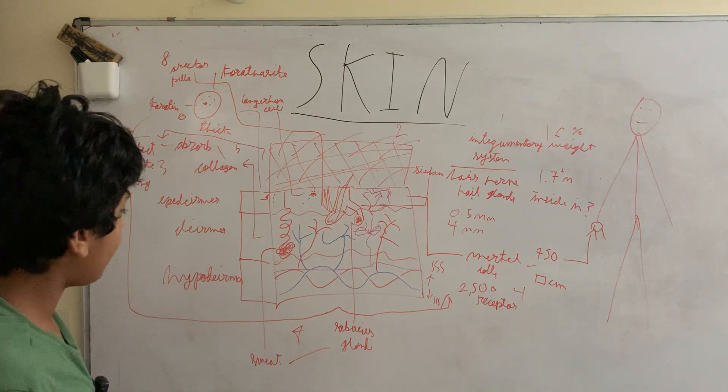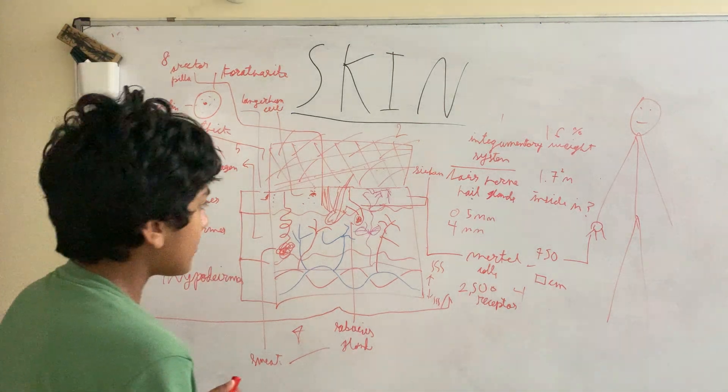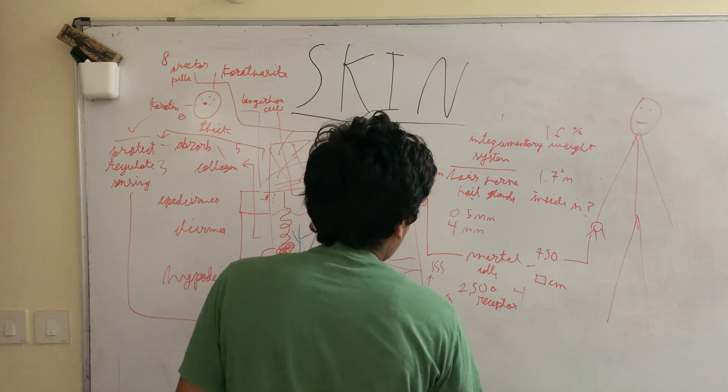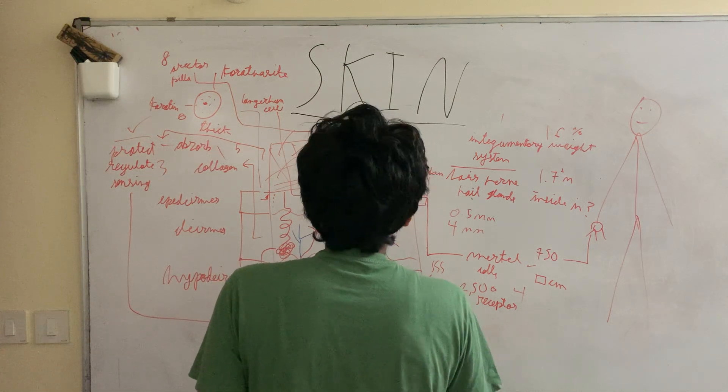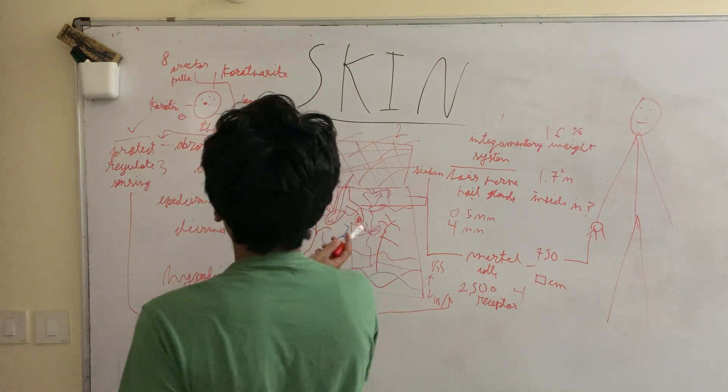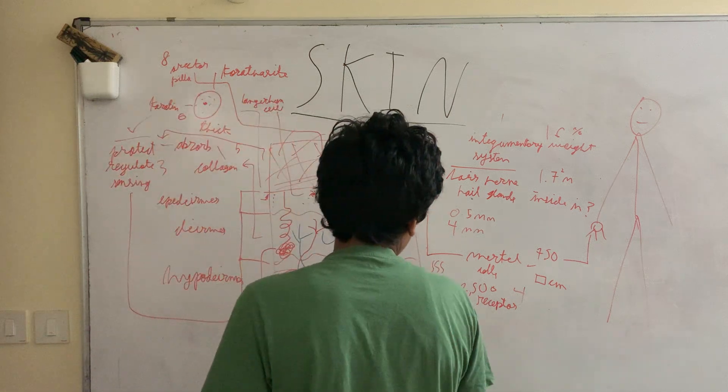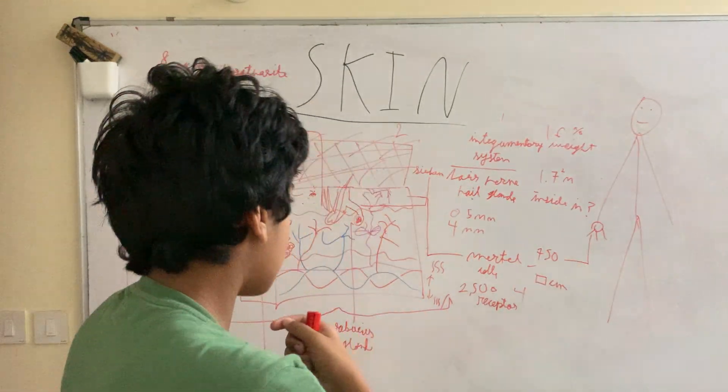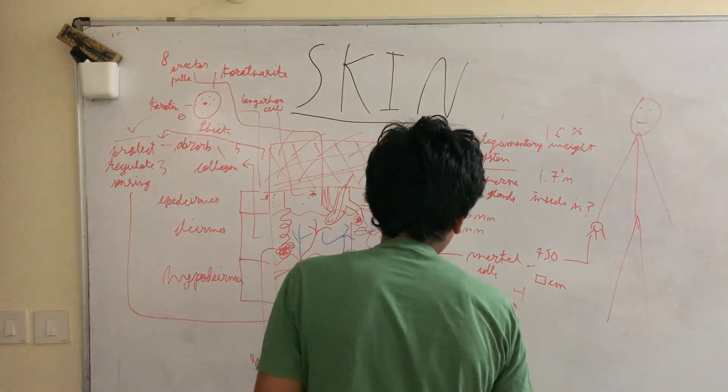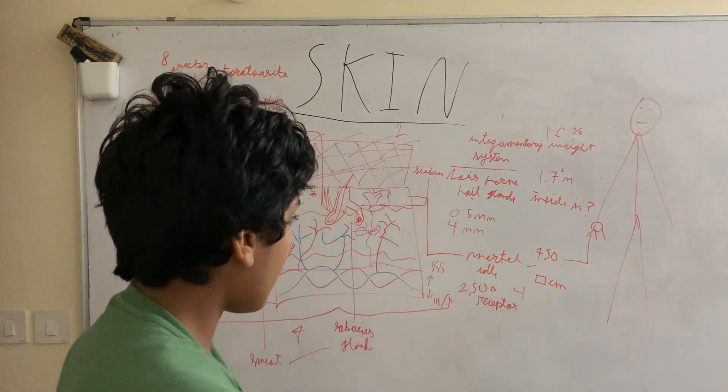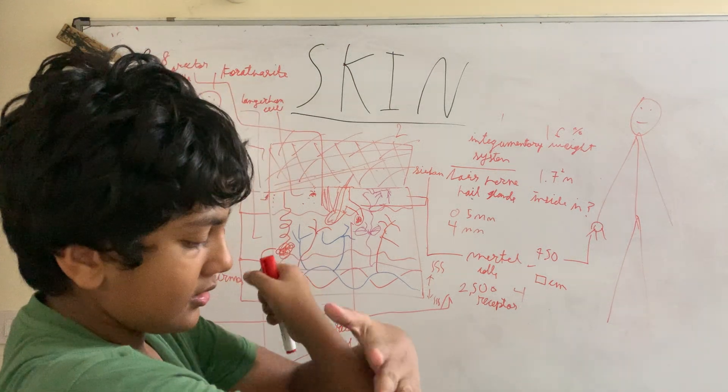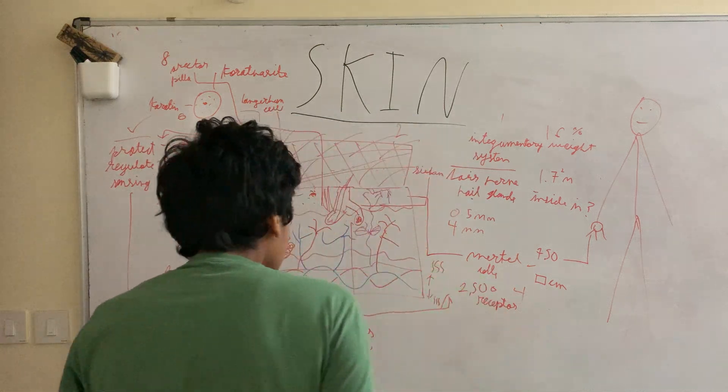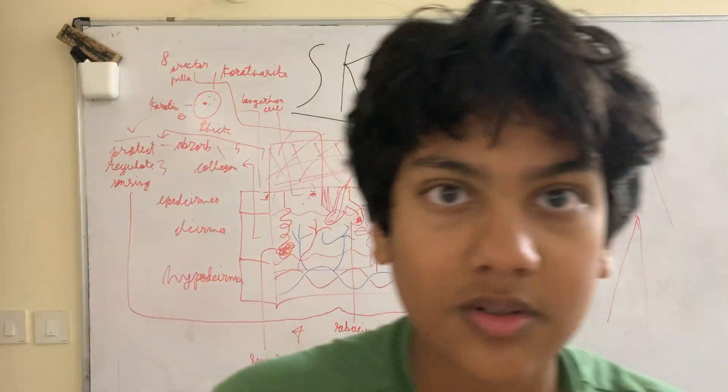Let's first look at the epidermis and see about Merkel cells. These mainly reside in the epidermis and these cells are basically touch sensitive. So pressure is sensed, then these cells will take action. Merkel cells allow us to sense pressure.